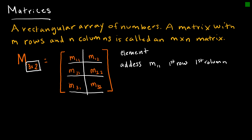Looking at m₃₂, that is third row, second column. So it's always rows by columns.